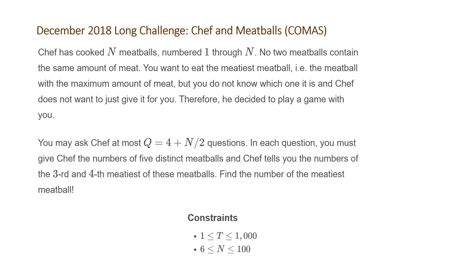The problem states: Chef has cooked N meatballs, numbered 1 through N. No two meatballs contain the same amount of meat. You want to eat the meatiest meatball, i.e. the meatball with the maximum amount of meat, but you do not know which one it is and Chef does not want to just give it to you. Therefore, he decided to play a game with you. You may ask Chef at most q equals four plus N divided by two questions. In each question you must give Chef the numbers of five distinct meatballs and Chef tells you the numbers of the third and fourth meatiest of the meatballs — in other words, the third and fourth largest. Find the number of the meatiest meatball. The constraints are: t, the number of test cases, between one and a thousand, and n, the number of meatballs for each test case, between six and 100.